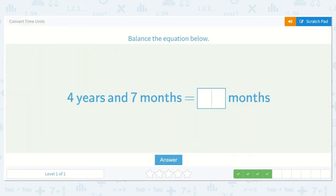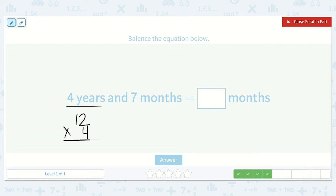Here we have four years and seven months is equal to how many months? Well, let's work on this part first. How many months are in a year? Yeah, 12. So here for four years, we would have 12 times four, which would be eight and four.